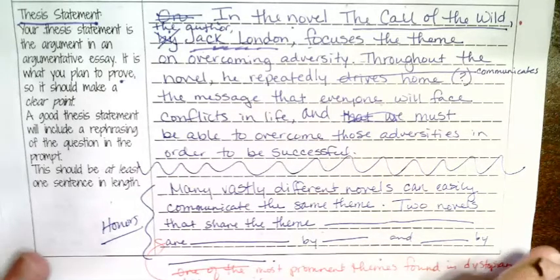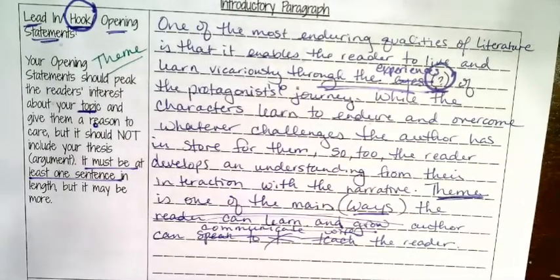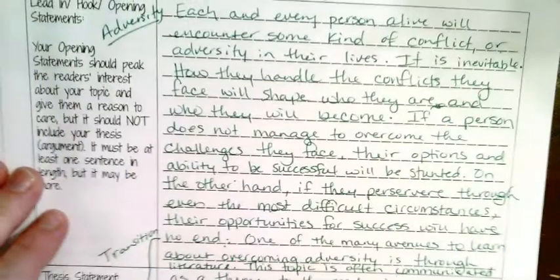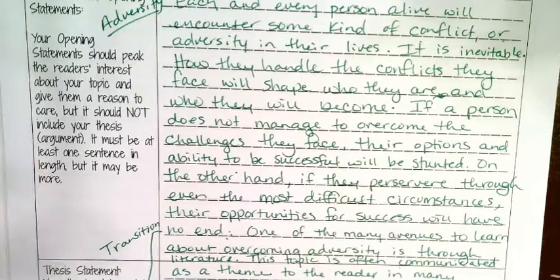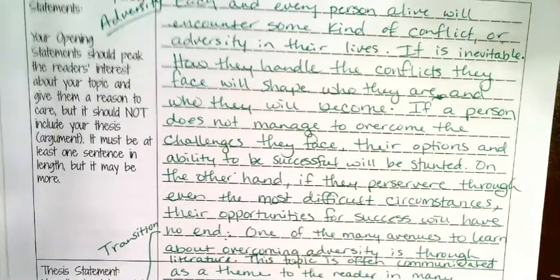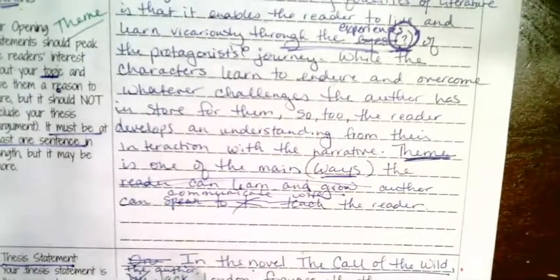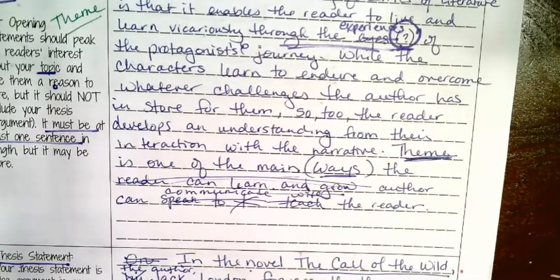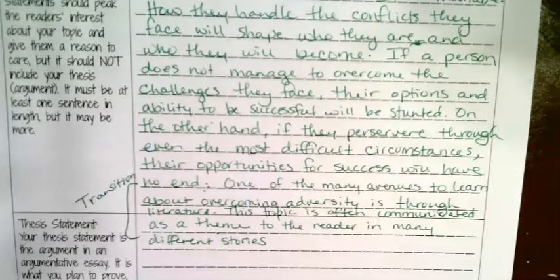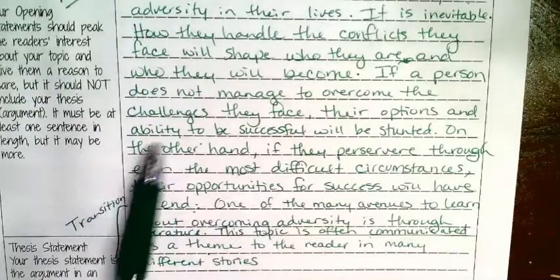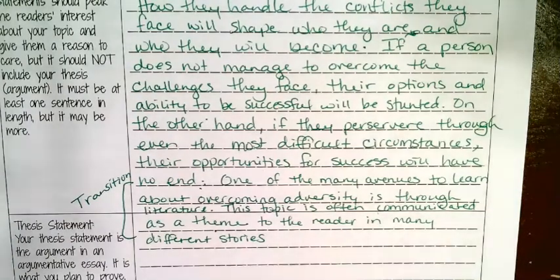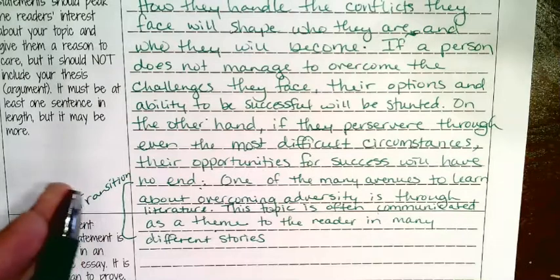The previous two videos I showed you were on the hook — either a hook where we are introducing our reader to theme in general, or a hook where we were introducing our reader to the actual theme we were working with. In order to transition from the hook to the thesis statement, we need an actual transition sentence where you have to switch from the particular theme to the idea of theme and that in literature.